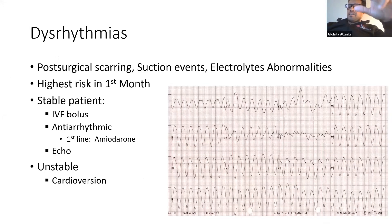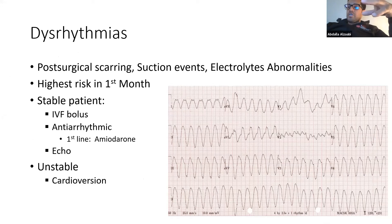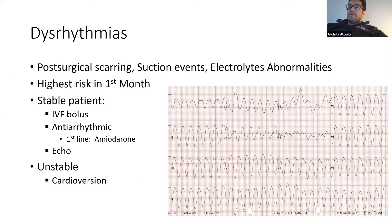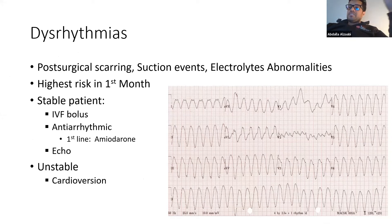These patients are also at high risk for arrhythmias — both atrial and ventricular — secondary to scarring, suction events, and electrolyte abnormalities. You treat them the same as non-LVAD patients. If they are stable, rate control with beta blockers and rhythm control with amiodarone as first lines. If they are unstable, cardiovert them.